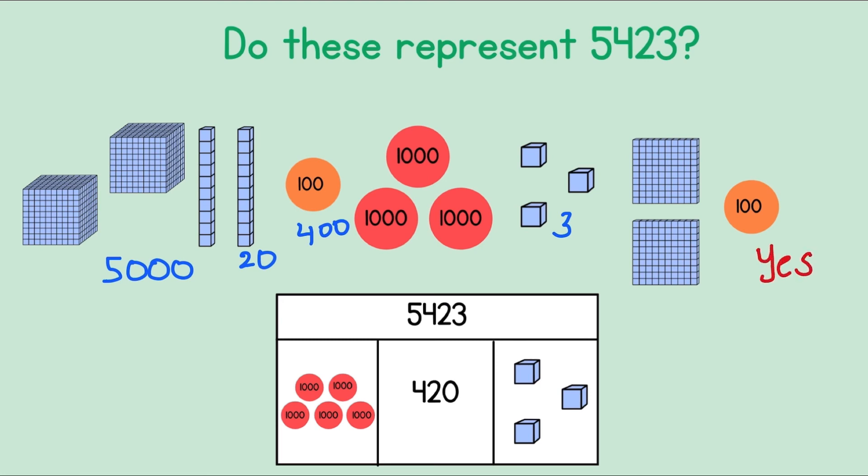Let's check the other one. Here we have 1,000, 2,000, 3,000, 4,000, 5,000. This is 420 and this is 1,000, 2,000, 3. Do these add up to 5,423? Yes it does.